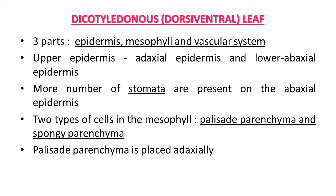In dicot leaf structure, more stomata are present on the abaxial (lower) epidermis. The number of stomata on the lower epidermis is more, and on the upper epidermis, stomata are fewer. The scientific reason is that the upper epidermis faces sunlight, so the possibility of transpiration is more. To avoid excess transpiration, fewer stomata are present on the upper surface.